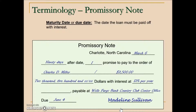Another term found on a promissory note is the maturity date or due date. This is the date the loan must be paid off with interest, and that is shown here at the bottom with a due date of June 4th. We can check that: March 6th plus 90 days should put us at June 4th.